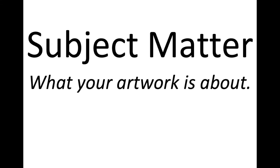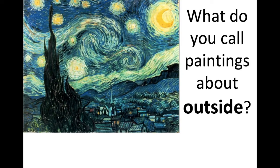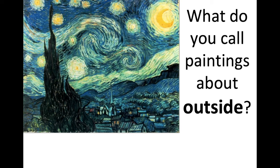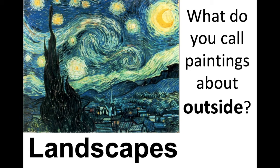Subject matter is what your picture is about. For example, what do you call pictures that are about outside? What do you call paintings about outside? Yeah — they're called landscapes. Landscapes are pictures about the great outdoors. So if you see sky, if you see land, a village or a forest — anything pertaining to outside — the subject is about outside, we call it landscapes.